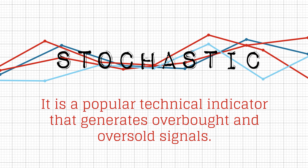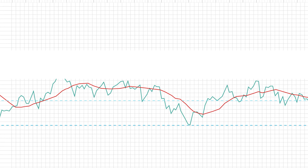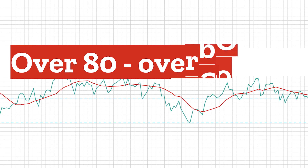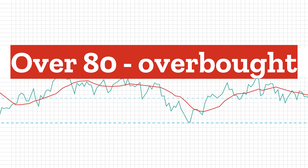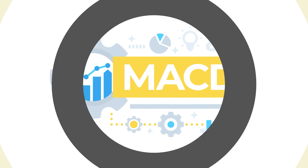Another leading oscillator is Stochastic. It is a popular technical indicator that generates overbought and oversold signals. Stochastic oscillators rely on an asset's price history and tend to vary around mean price levels. They measure asset price momentum to determine trends. On a scale of 0 to 100, a measurement of over 80 means an asset is overbought, while below 20 means it is oversold.